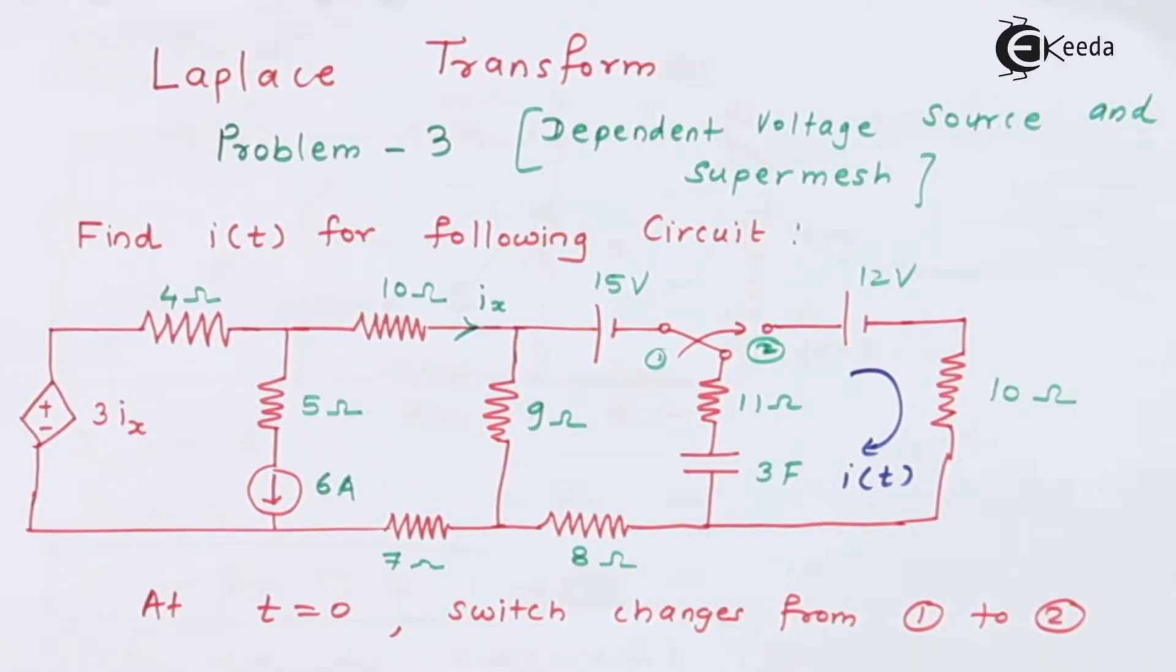So as usual, what we should do first: because there is a capacitor, we need to make sure whether there is any initial voltage across that capacitor or not. Because finally we have to solve this circuit, we need to know the voltage. So let's solve this circuit which is at t equal to 0 minus and at position 1.